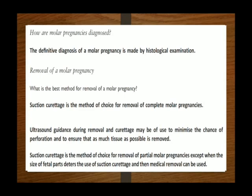How are molar pregnancies diagnosed? The definitive diagnosis is made by histological examination following removal of the molar pregnancy. Suction evacuation is the method of choice for removal of complete and partial molar pregnancies. Ultrasound guidance during evacuation and curettage may minimize the chances of perforation and ensure as much tissue as possible is removed. For partial molar pregnancies, suction curettage is preferred, except when the size of fetal parts deters its use, in which case medical removal can be used.